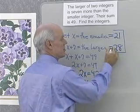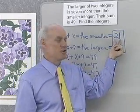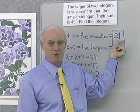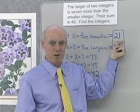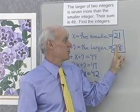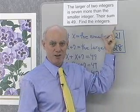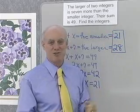So here are the answers to this question. I have two integers, 21 and 28. 28 is 7 more than 21. So the larger is 7 more than the smaller. And their sum, 21 plus 28, is 49. So these two integers right here satisfy all the conditions of the problem. And so those are our two answers.